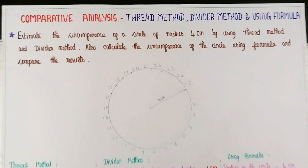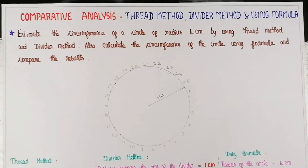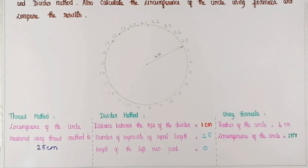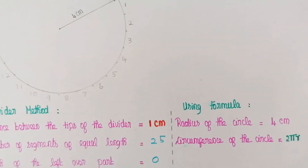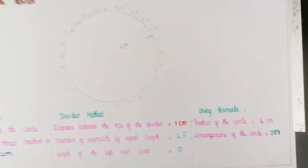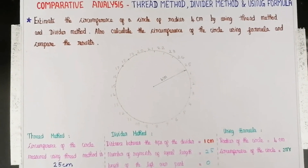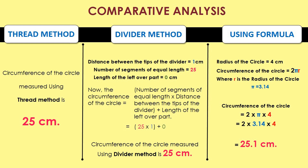Now let's verify the same using formula. Here the radius of the circle is 4 cm. The formula to find out the circumference of the circle is 2πr, where r is the radius of the circle. Now let's see the comparative analysis of the thread method, divider method and using formula.